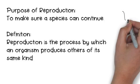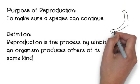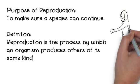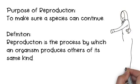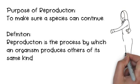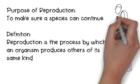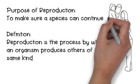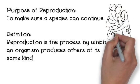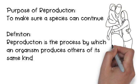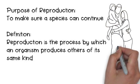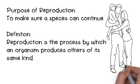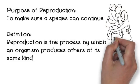So let's first talk about what's the purpose of reproduction. It's to make sure a species can continue, and reproduction is a process by which an organism produces others of the same kind. Reproduction is responsible for making families all around the world and the spread of germs and bacteria. But this is how life goes on and continues on our planet.